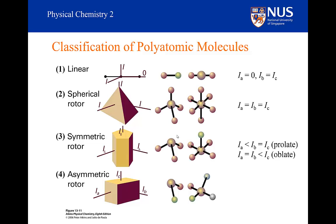Then we have what are known as symmetric rotors. This is where one of the moments of inertia is different from the other two — so two of them are the same and one is different. Linear is when two are the same but one is zero. Spherical is where they are all the same. Symmetric is where two are the same but the other one is non-zero. Examples include ammonia or a square pyramidal molecule such as xenon oxytetrafluoride. We can get two types: the smallest moment of inertia different from the other two — known as a prolate symmetric top — or the largest moment of inertia different from the other two.